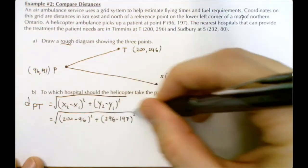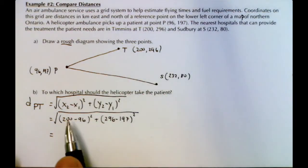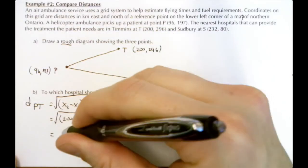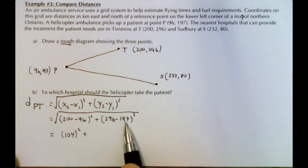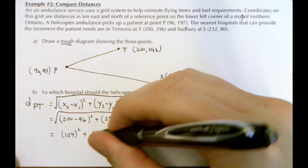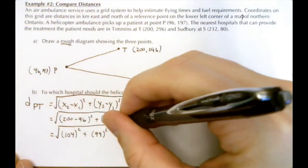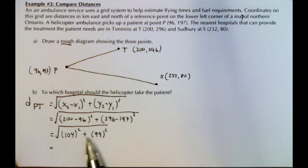If we subtract, we get 104 squared plus (296 - 197 is 99) 99 squared, square root. If we square these and add them in our calculator, what do we get? 104² + 99².